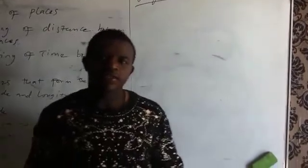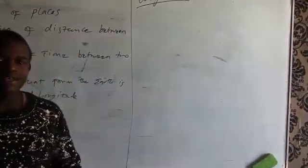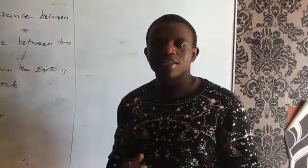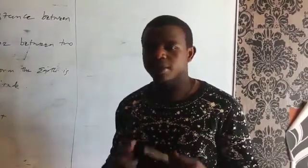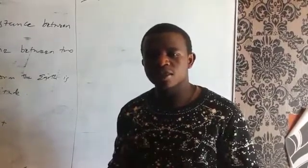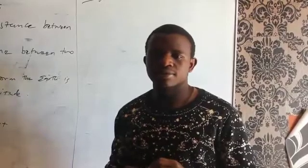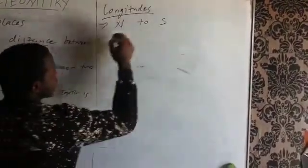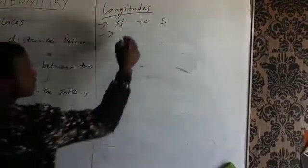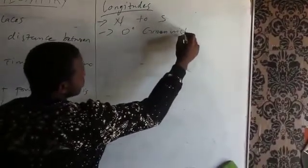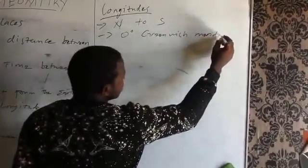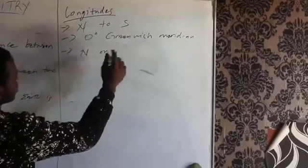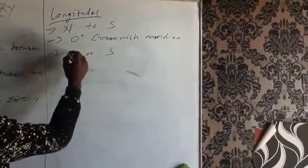Now let's look at the longitudes. These are lines that run from north to south on the Earth's surface. The longitude which is zero degrees is referred to as the Greenwich Meridian. The longitudes either have the east or the west sign.